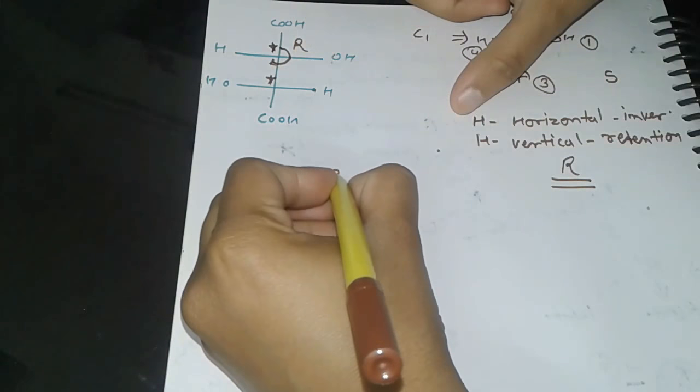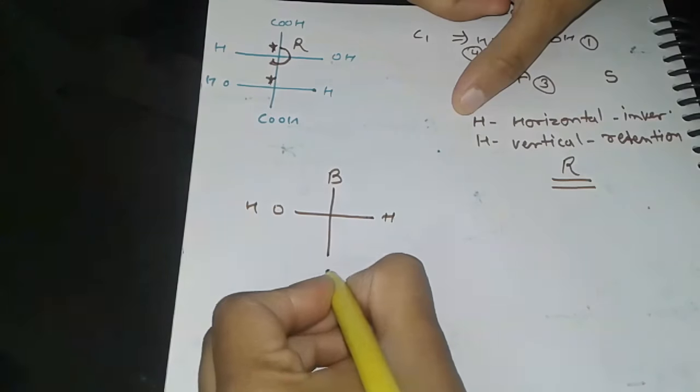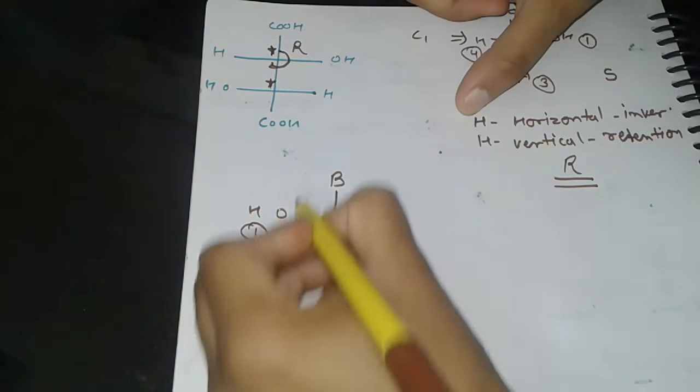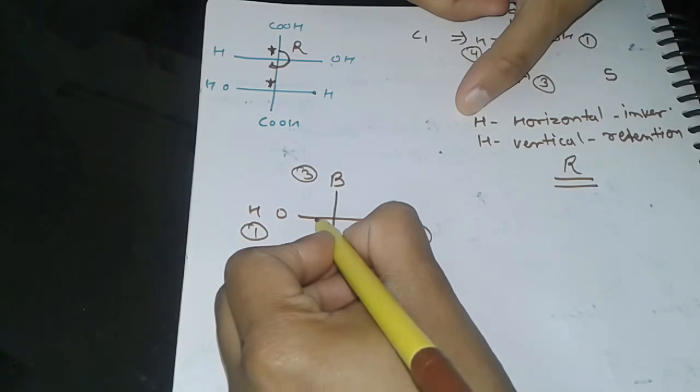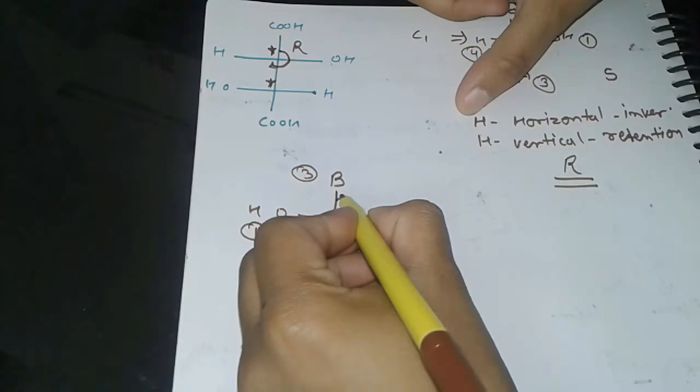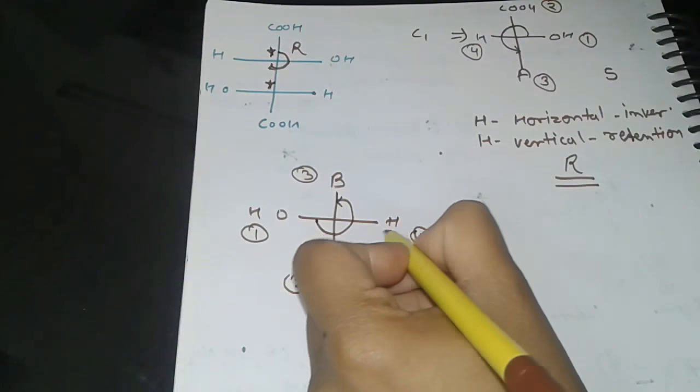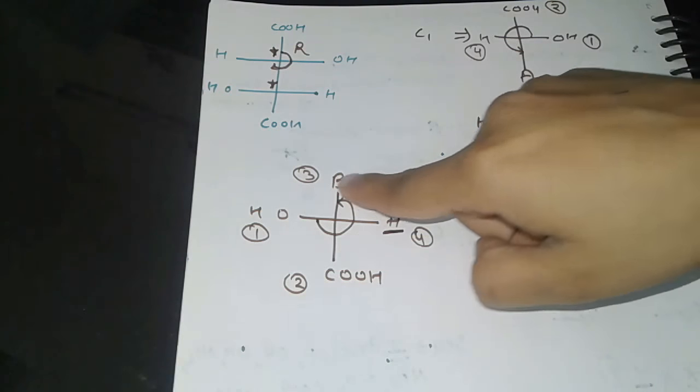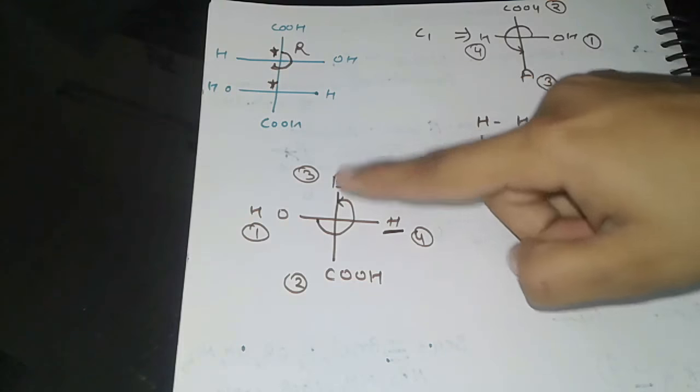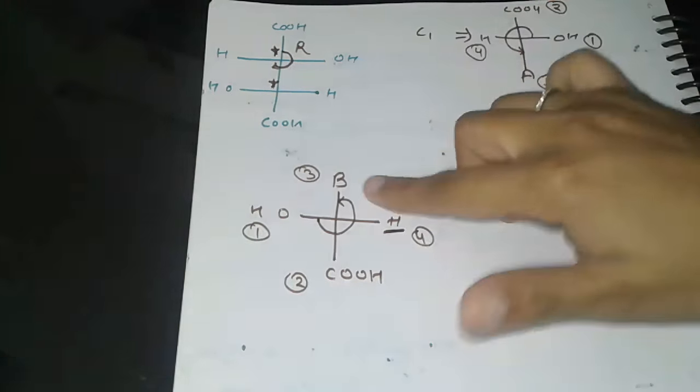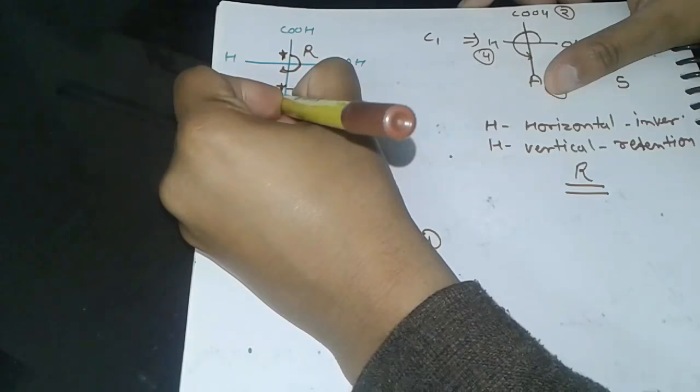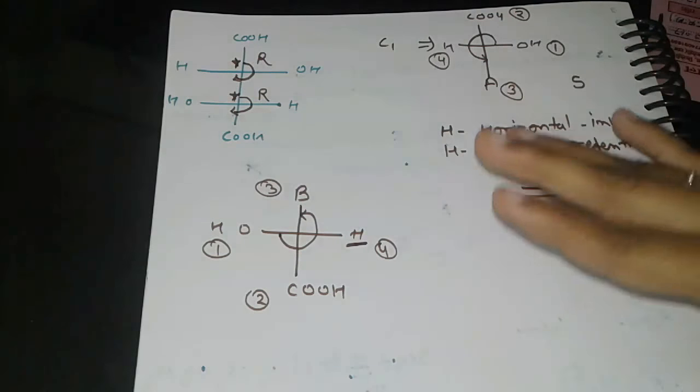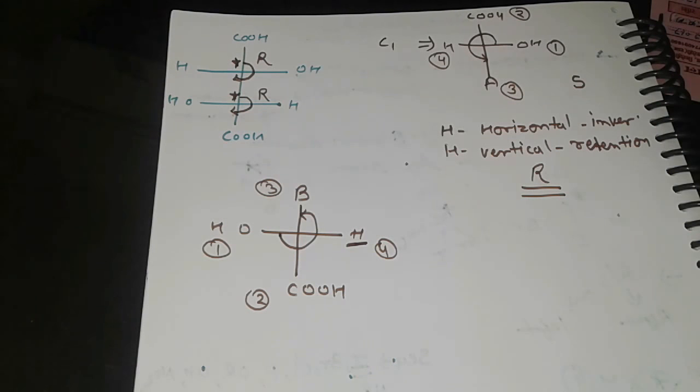This type is C2 carbon. This is Fischer representation with numbering one, two, three, and four. One, two, three—hydrogen's position is in horizontal line, so we do inversion. The rotation is anticlockwise S, so opposite is R. Here C2 carbon has rotation R. This is Fischer projection RS nomenclature.